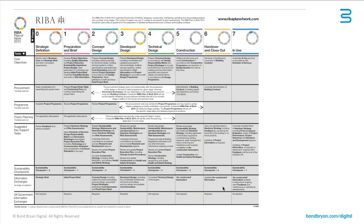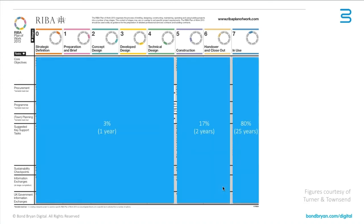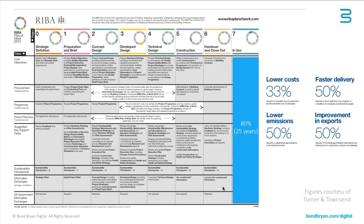Going back to 2013, the RIBA rejigged the RIBA Plan of Work, and as part of this process they included UK government information exchanges, which is primarily what we're talking about for COBie. In this particular diagram, at stages one, two, three, and six, you will be delivering information to the client, and the client will be using it during stage seven. The amount of money spent in design and even construction is relatively small — only 20% of the cost for a reasonably large project is spent in stages zero to six. So 80% of that cost, over a 25-year life cycle, is spent in stage seven. The government's real focus is on in-use, and how to reduce that large chunk of cost.